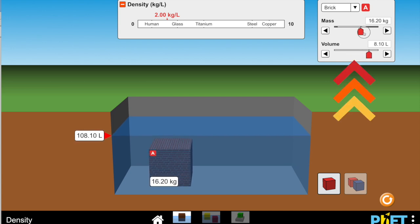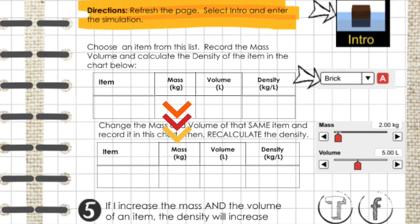Next, you need to increase the mass and the volume for your particular item. And then rerecord the new mass, the new volume, and the new density of your item.